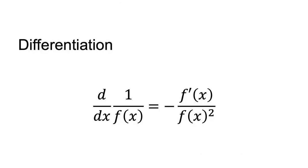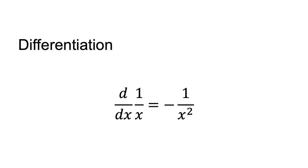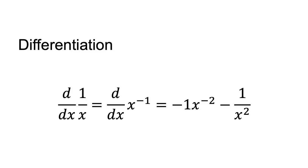The derivative of a fraction is d/dx of 1 on f of x equals negative f prime of x, on f of x squared. For example, d/dx of 1/x equals minus 1 on x squared. Where you have a function 1 on x to the power of a, it is often easier to write it as x to the power of negative a and use the rule for exponentiation. For example, d/dx of 1/x equals d/dx of x to the power of minus 1, equals minus 1 times x to the power of minus 2, equals minus 1 on x squared.